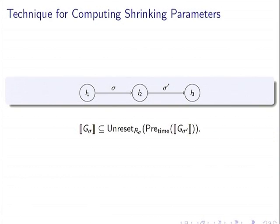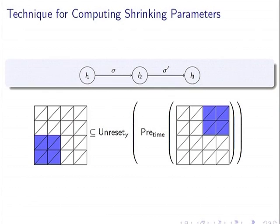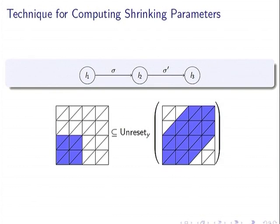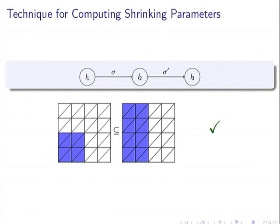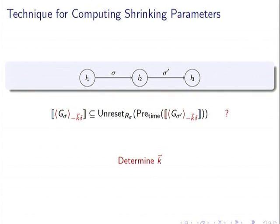Let's simplify with an example. The condition for non-blockingness is: guard of sigma is included in the predecessor of sigma prime. Consider these guards as zones — as seen in the previous talk. This is the guard of sigma prime and sigma. The pre-time (time predecessors) is easy to compute, and the reset set is the set of valuations from which you can reach this set by resetting y. You get the inclusion, meaning this automaton is non-blocking for this edge.